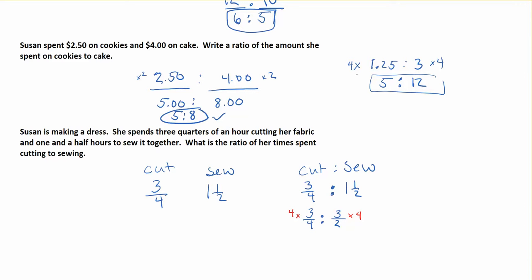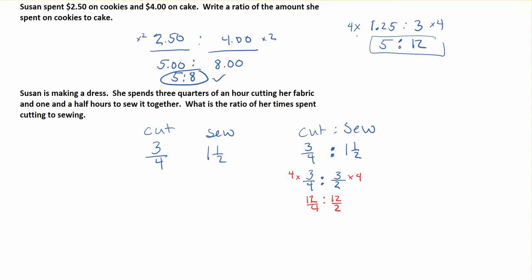If we do our timesing, four times three gets me 12/4. Here I've got 12 times three gets me 12, in that case over two. I'm leaving the bottom the same. Then we can simplify these fractions. 12 divided by four is three, and 12 divided by two is six. That becomes our simplified ratio.